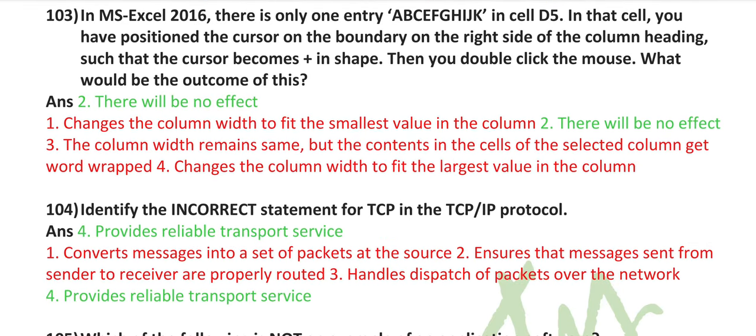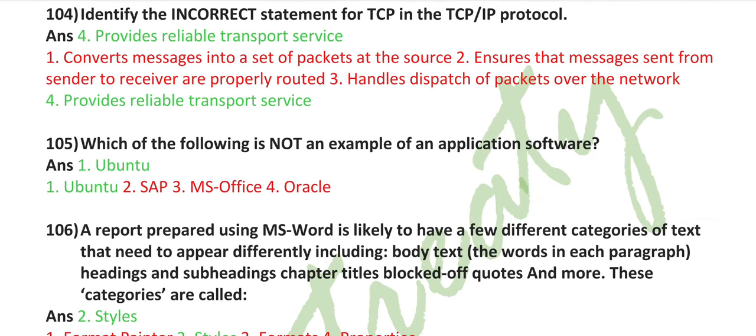In MS Excel 2016, there is only one entry ABCEFGHIJK in cell D5. In that cell, you have positioned the cursor on the boundary on the right side of the column heading such that the cursor becomes a plus in shape, then you double-click the mouse. What would be the outcome of this? There will be no effect. Identify the incorrect statement for TCP. In the TCP/IP protocol, TCP provides reliable transport service.